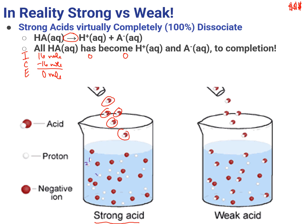Counting them up, I have 16 H pluses — all 16 of those HAs dissociated and became H+ and A-. Not only do I have 16 H pluses, but I also have 16 A minuses. So in a strong acid, whatever concentration of acid you put in, all of those moles of acid dissociate completely.